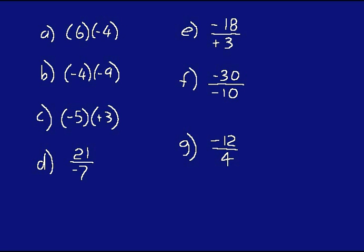On A, you have different signs, so your answer will be negative 24. On B, you have the same sign, so your answer will be a positive 36. You don't have to put the plus sign down for positive answers — it's understood that it's there.